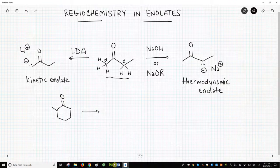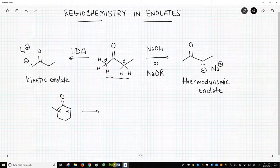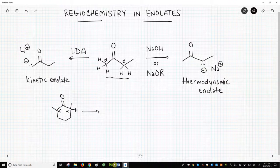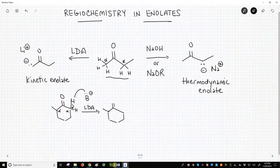Well, the starting ketone has two alpha carbons. LDA removes the less substituted alpha hydrogen to give this enolate.